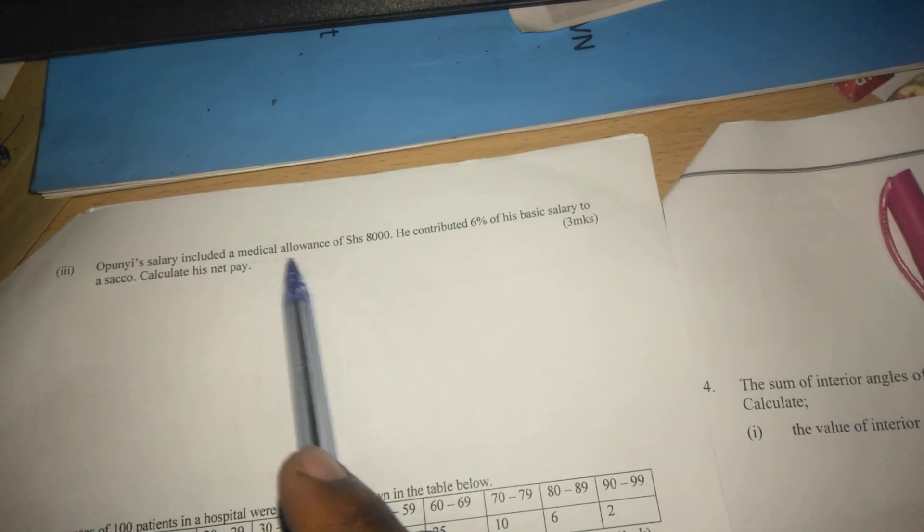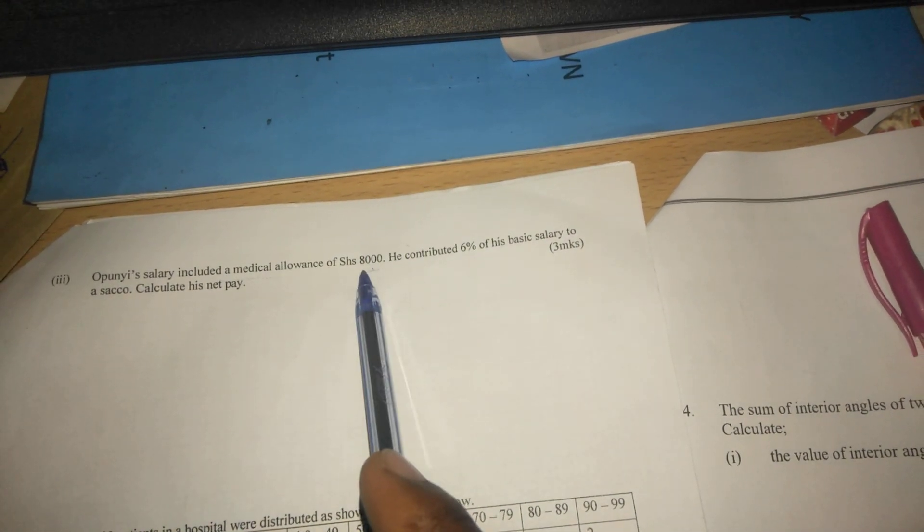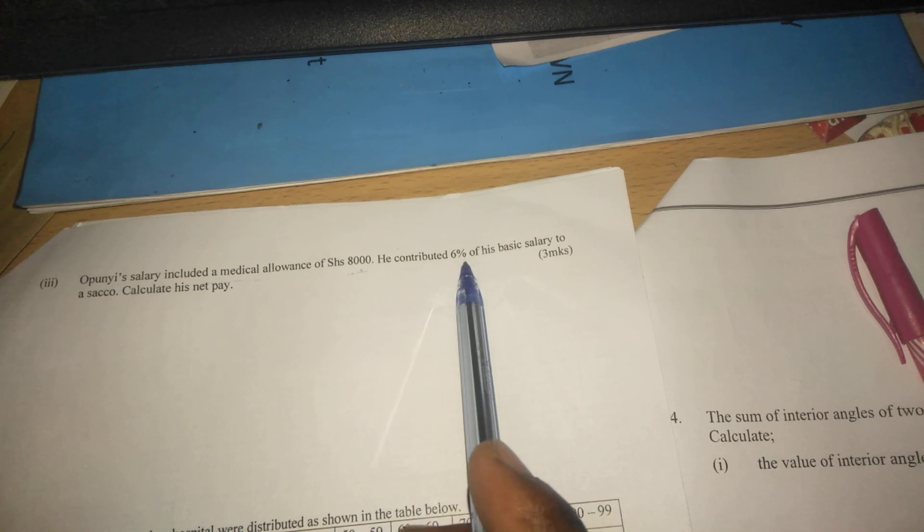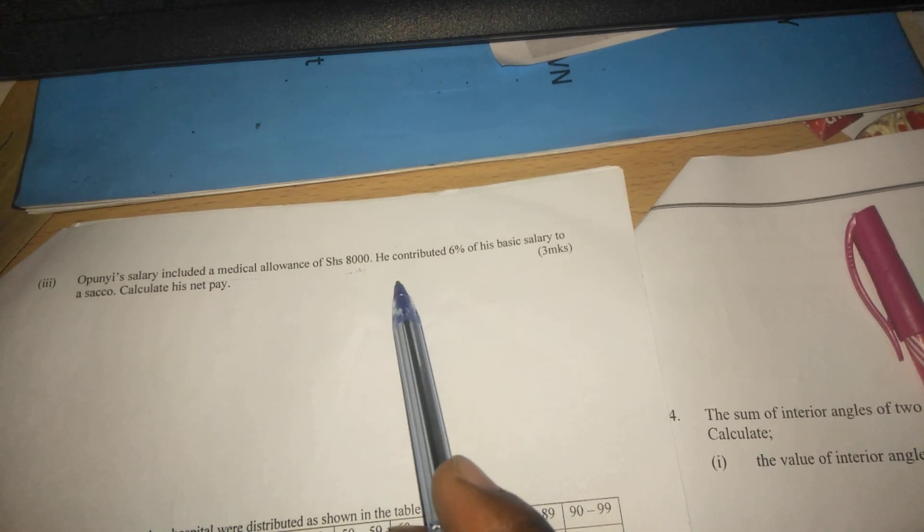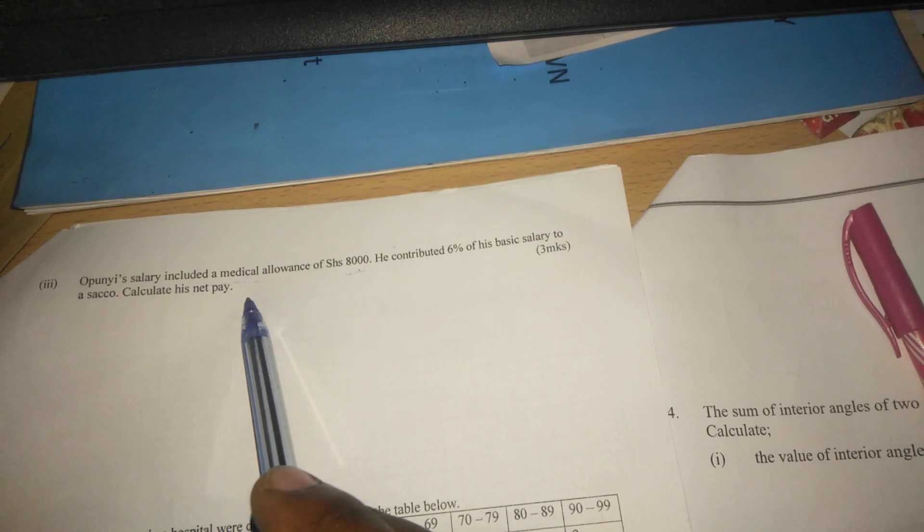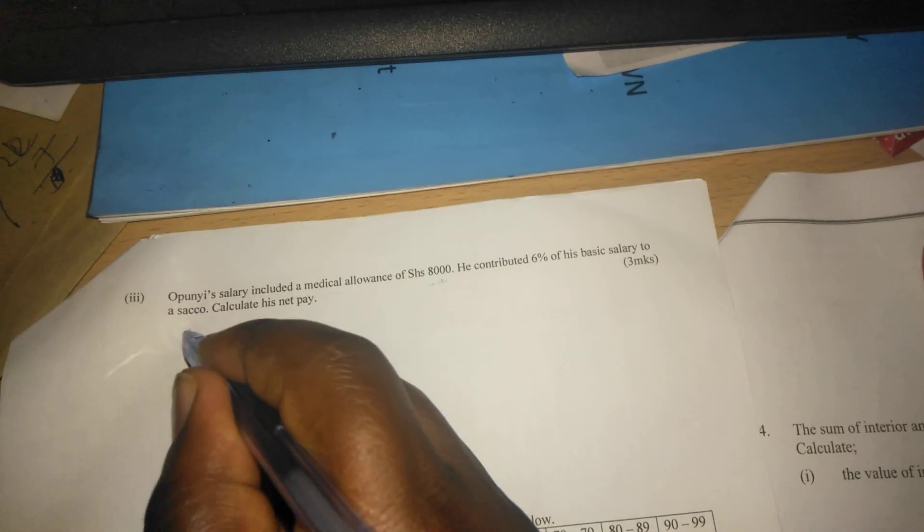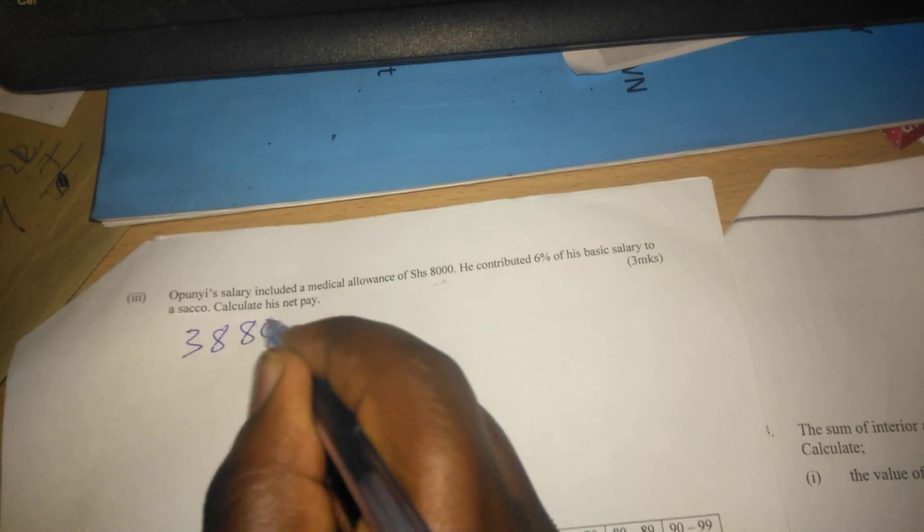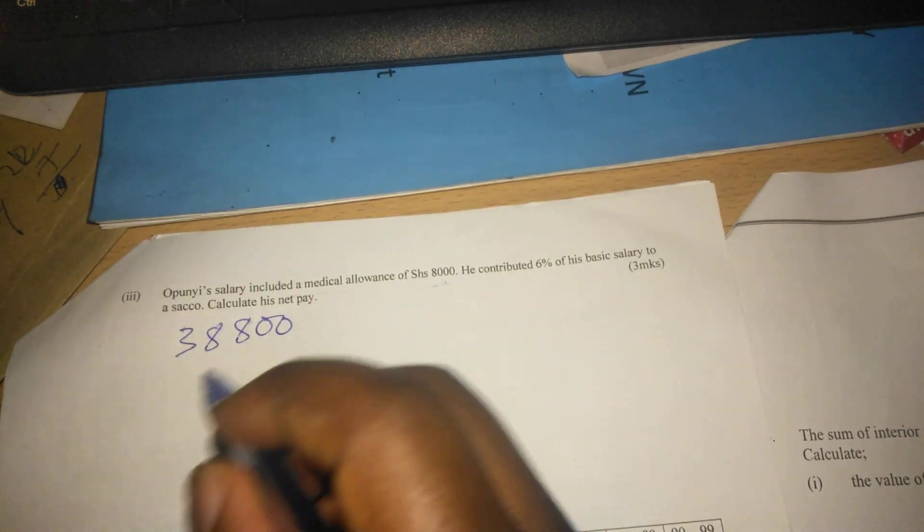Then apart from paying tax, we are told the following in part C: Opuni's salary included a medical allowance of 8,000. He contributed 6 percent of his basic salary. Calculate his net pay. For us to get his net pay, we should get taxable income, which is 38,800, and subtract all deductions.